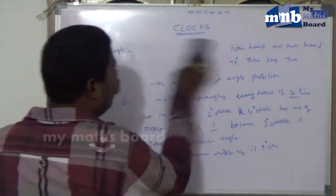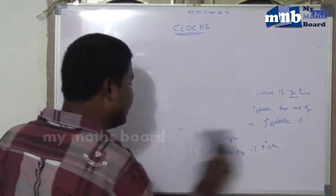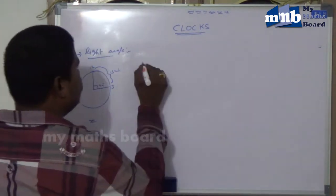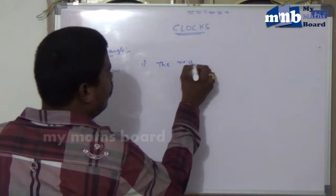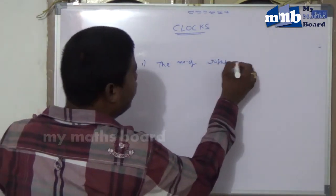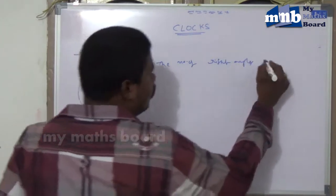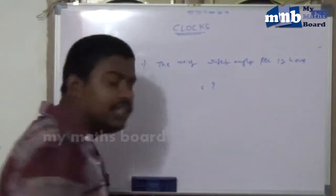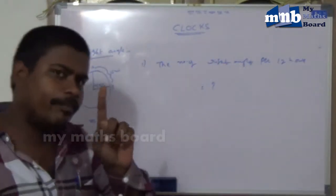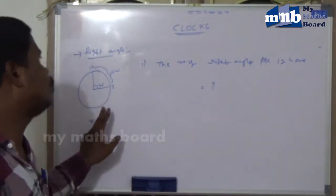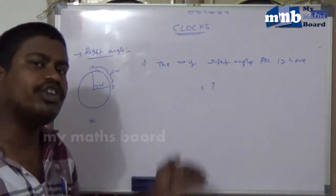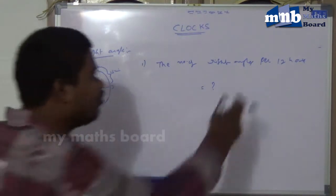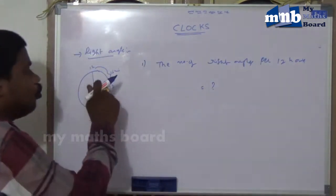We will discuss how many right angle positions occur in 12 hours and per day. The number of right angles per 12 hours: according to our theory, per one hour it carries two right angle positions, so per 12 hours that is 12 into 2 equals 24. But 24 is not correct because in 12 hours we have two common right angles.